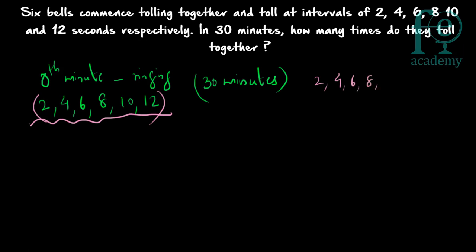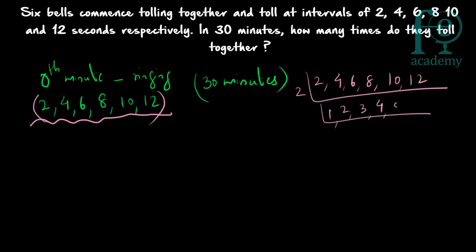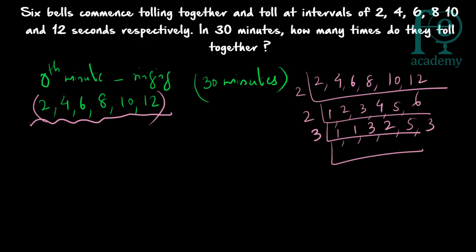The highest number is 12, so from there we find the LCM. Writing out 2, 4, 6, 8, 10, and 12: dividing by 2 gives 1, 2, 3, 4, 5, 6; dividing by 2 again gives 1, 1, 3, 2, 5, 3; dividing by 3 gives 1, 1, 1, 2, 5, 1. So 5 × 2 = 10, 10 × 3 = 30, 30 × 4 = 120. So 120 is the LCM of 2, 4, 6, 8, 10, and 12.